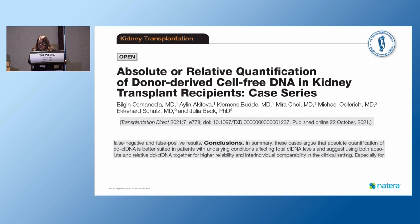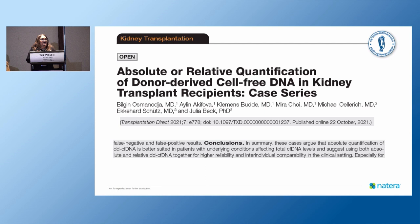In Transplantation Direct, the online publication of TTS, the German group presented an interesting paper in which they raised the first case of using a two-algorithm paradigm, or a two-metric paradigm, in which not only absolute counts of the donor DNA or relative percent of cell-free DNA are used independently. This group demonstrated that there is a higher incidence of false positives and false negatives when using only one metric.